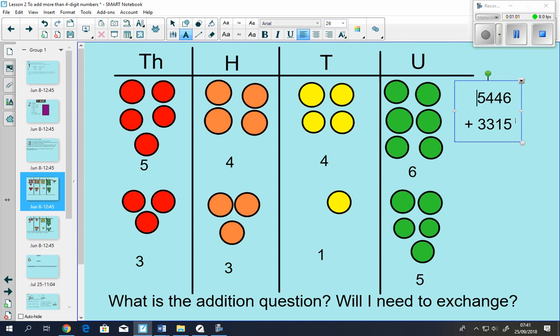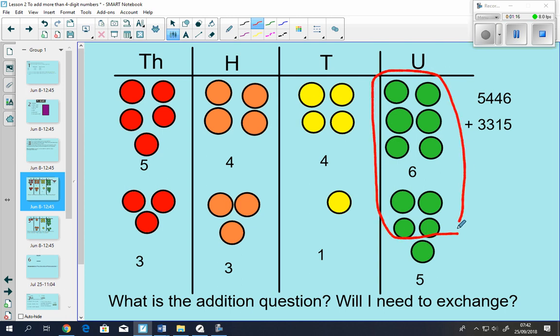And if we do that in a column method, you'll see that, do we need to exchange? Yes, we will, because if you consider we've got here, we have 11 counters. So if you consider exchanging these 10 here for another one of these yellow ones, so these 10 all transform into one more of these yellow ones.